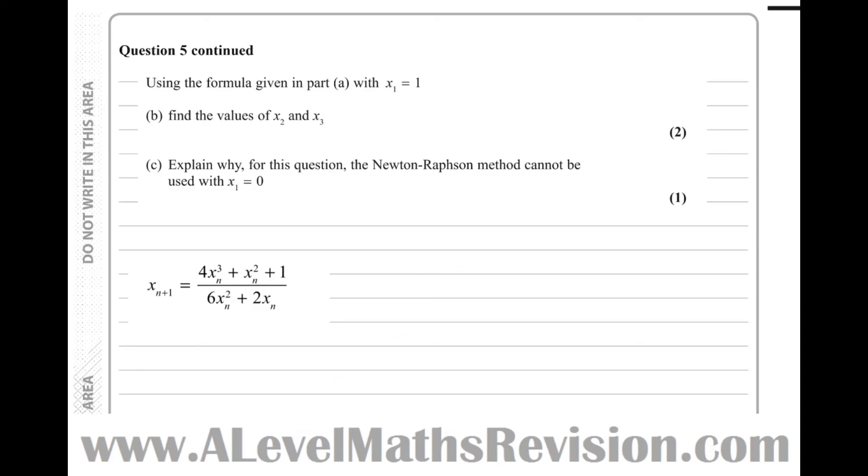So now part b. Using the formula given in part a with the first iteration x1 equals 1, that's the formula there, I've just copied it here, find the values of x2 and x3.